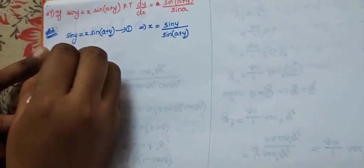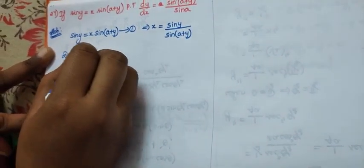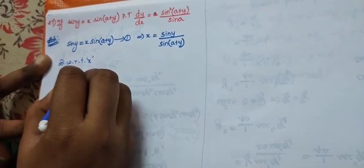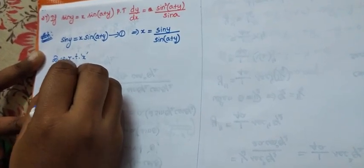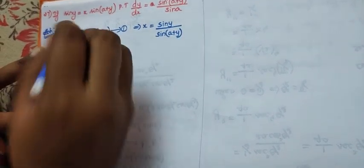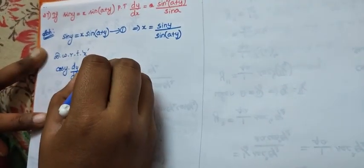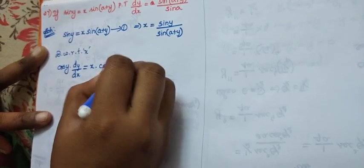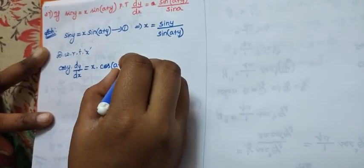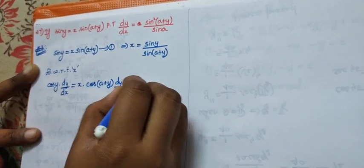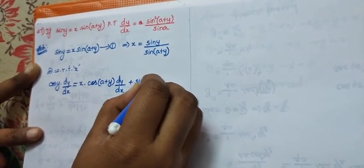Now differentiate with respect to x. The differentiation of sin y gives cos y · dy/dx, which is equal to keeping x as such: sin(a+y) differentiates to cos(a+y) · dy/dx, plus keeping sin(a+y).